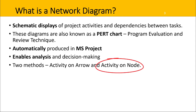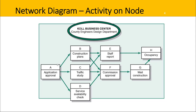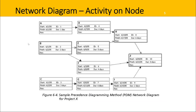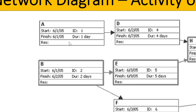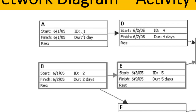In this video series we're going to concentrate on activity on node — node means box. Here is an example: the activity is on the node, which is the box. The identifier is A and its application and approval. This network diagram shows us the different activities that need to be done and how they relate to each other. We have a number of different paths — for example A, B, E, and then H is one path. Here's another example, similar to what would be outputted in Microsoft Project. The activity names are at the top — A B C D E F G H I and J — with start and finish dates, an ID number, and the duration, which is one day for this particular activity.